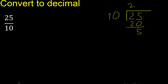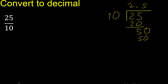Therefore complete — always complete with 0. Bring down here: 50. 10 multiply by which number is nearest to 50 but not greater? Multiply by 5 is 50, exact. Subtract: 0 remainder. Therefore finish.